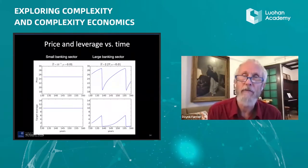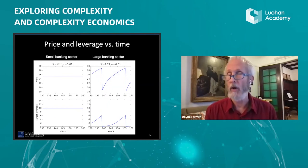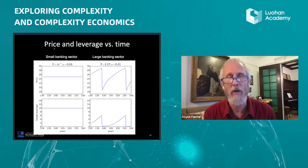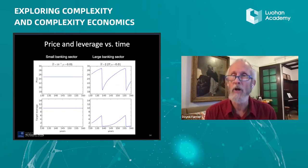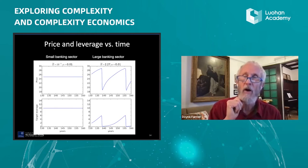Well, if the banking sector is small enough, or the amount of leverage they're using is low enough, then we get the market just, and this is without any noise, the general model has noise in it. But we get the economy settling into a steady state. But if we turn up the leverage, or we turn up the size of the banking sector, this destabilizes, and you see spontaneous oscillations.